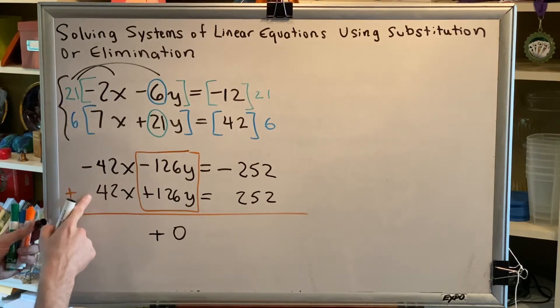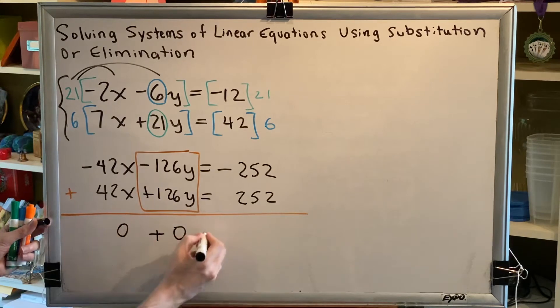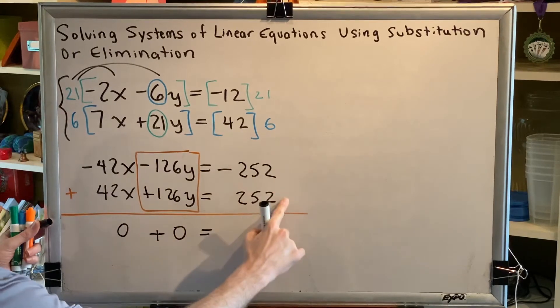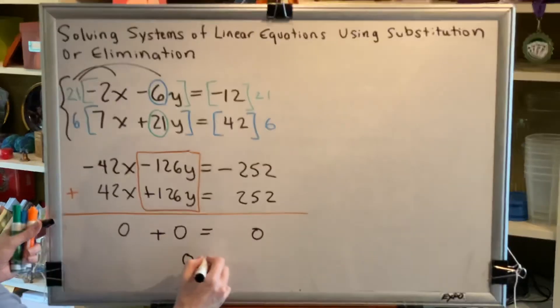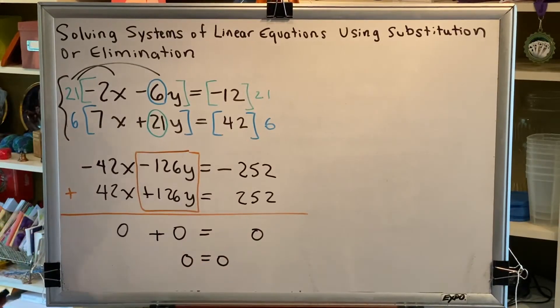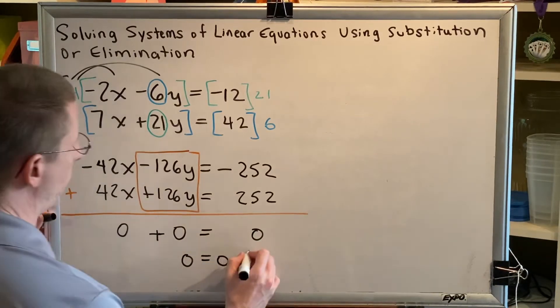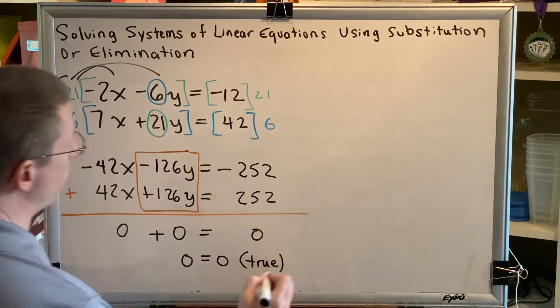Negative 42x plus 42x makes 0. Negative 252 plus 252 makes 0. 0 plus 0 is 0. So this becomes the equation 0 equals 0. No variables, but a true statement.